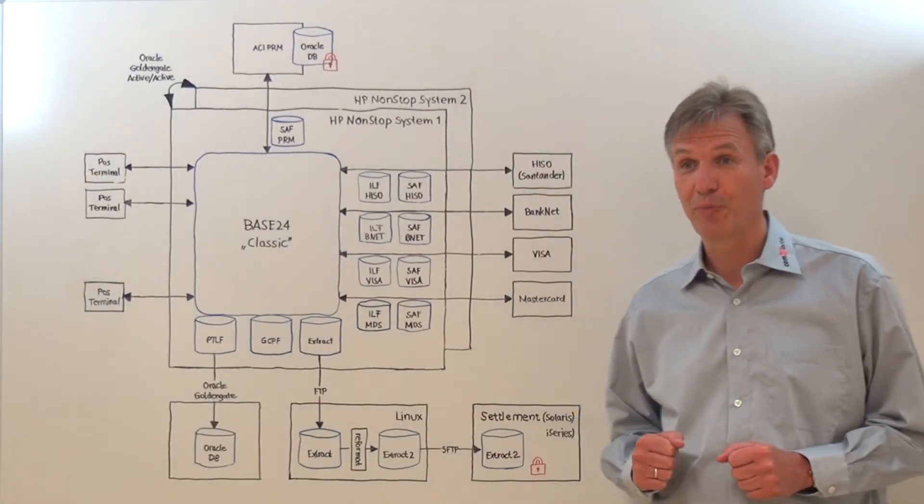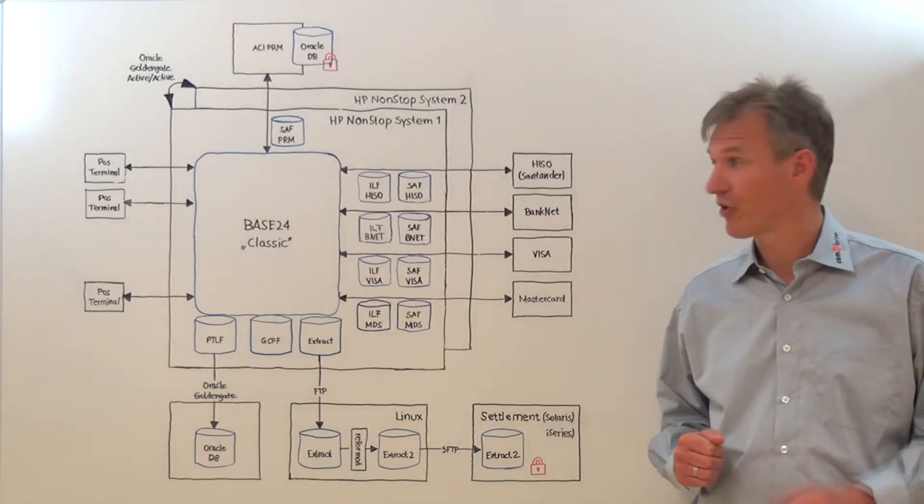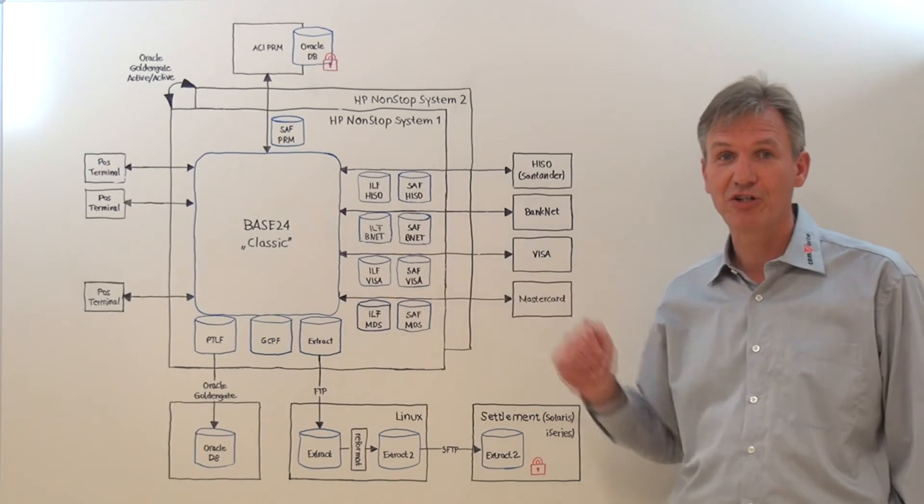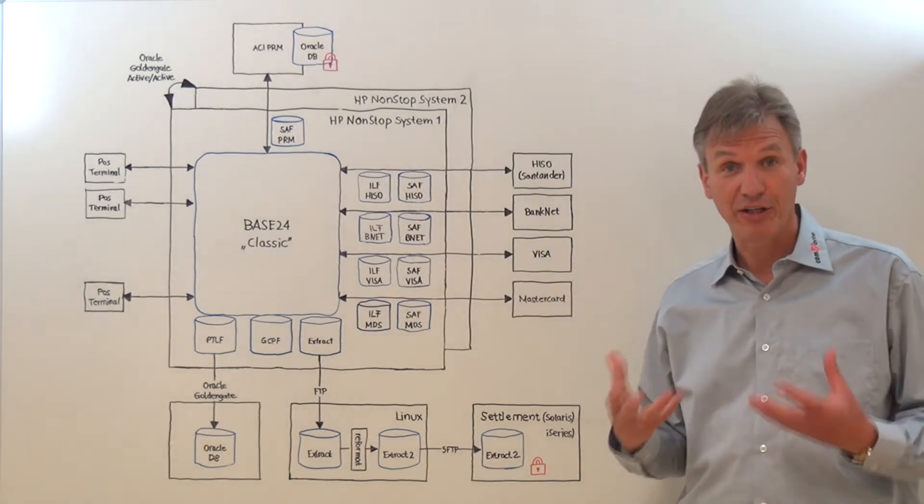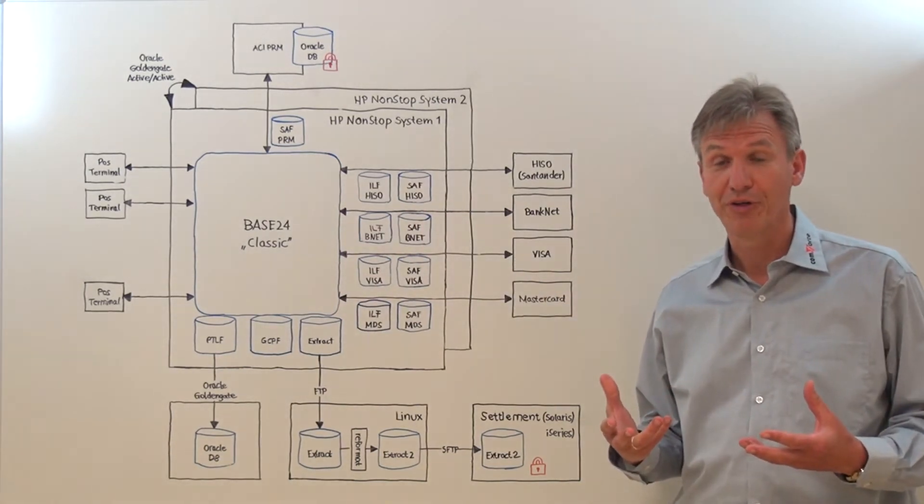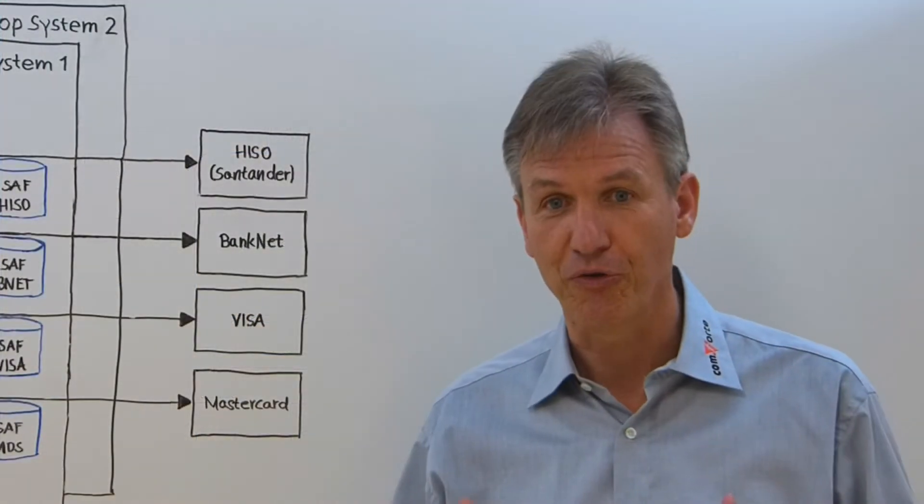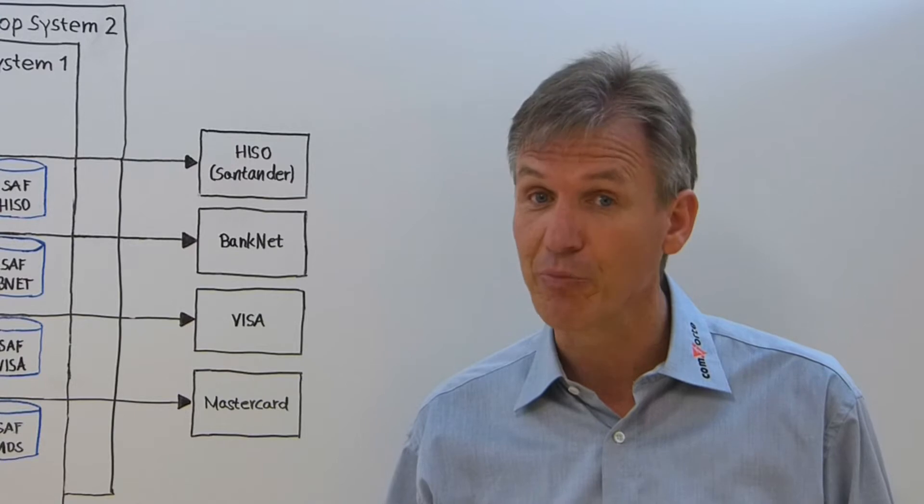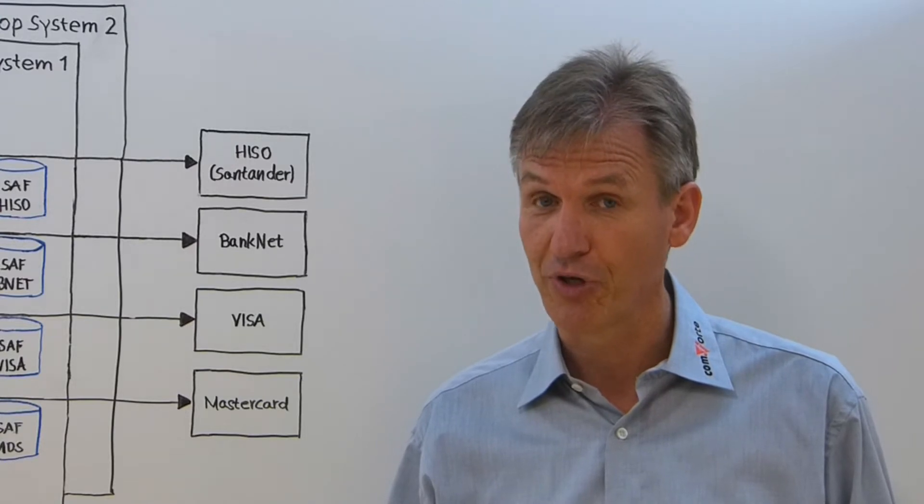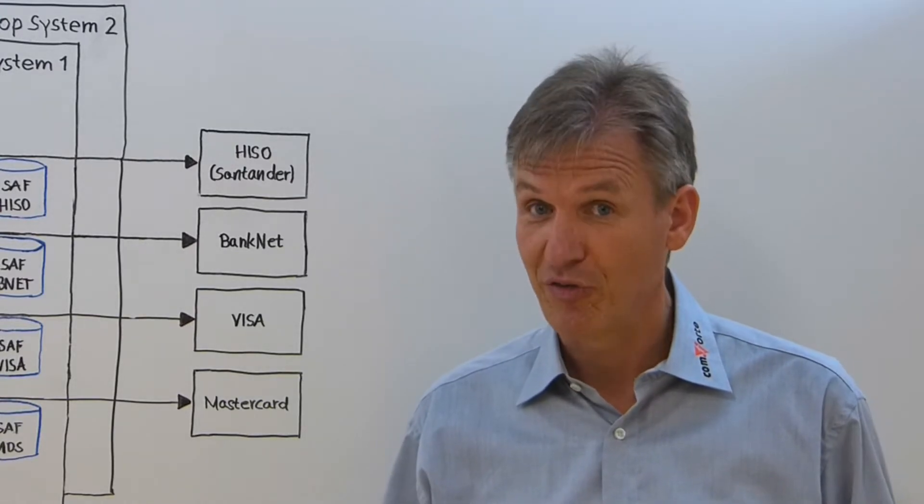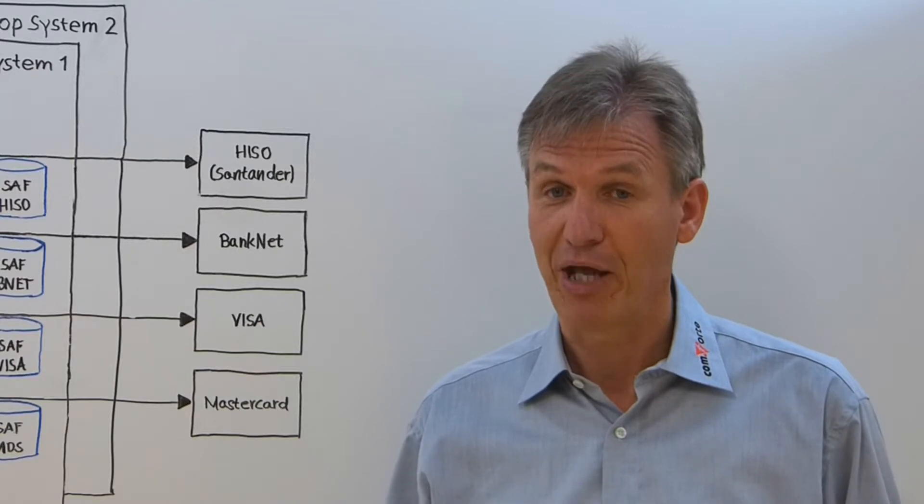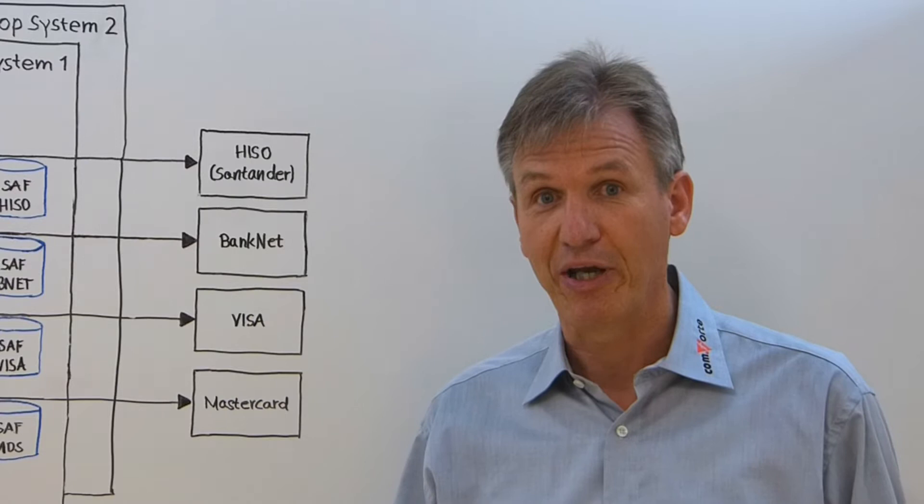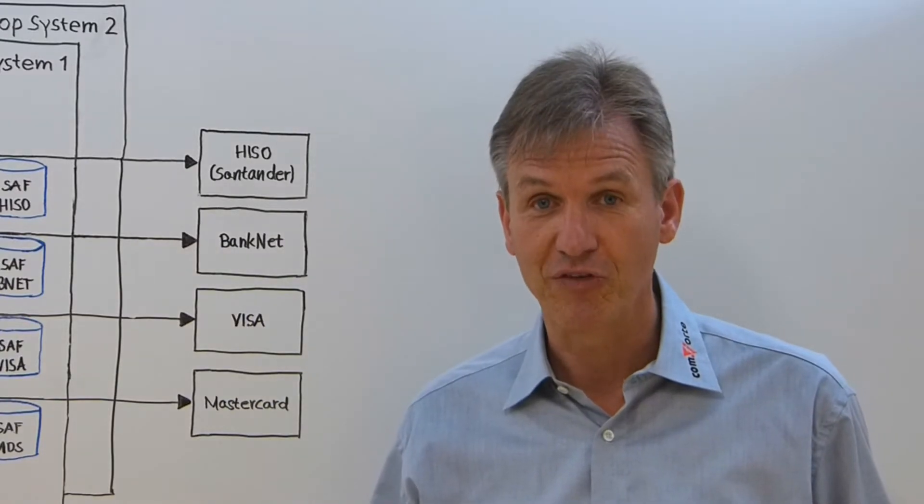In this session we will look at a typical BASE24 processing environment like this one to understand how the PANs are actually flowing through the system and identify where they are stored. I will then explain how our SecureData24 solution will help you render the PAN unreadable anywhere where it is stored as the PCI 3.4 mandate requests. And not only that, I will also explain how you can actually reduce the PCI scope.